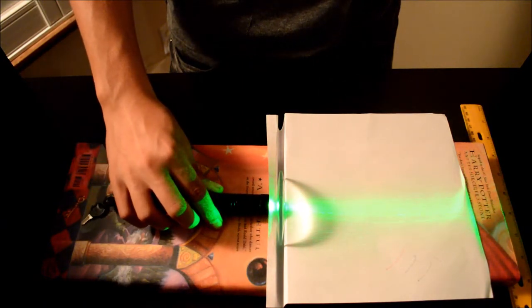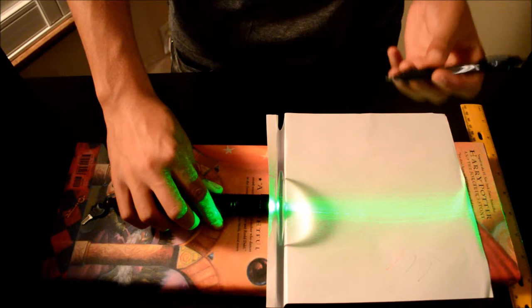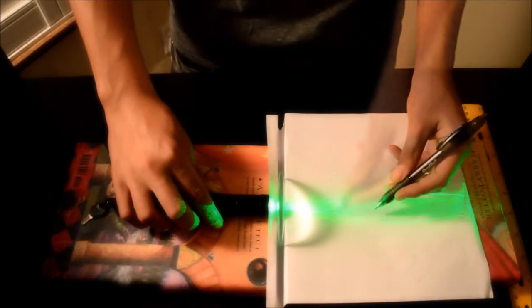Shine the laser directly through the center of the lens, and draw three short lines on the beam that is exiting.